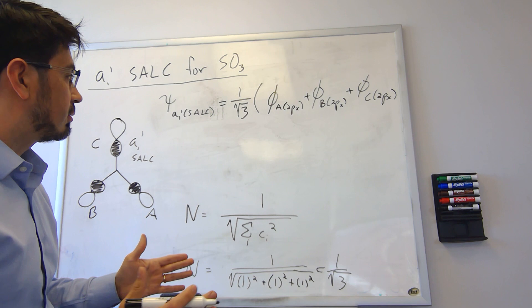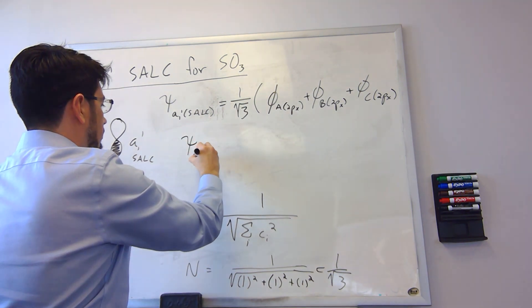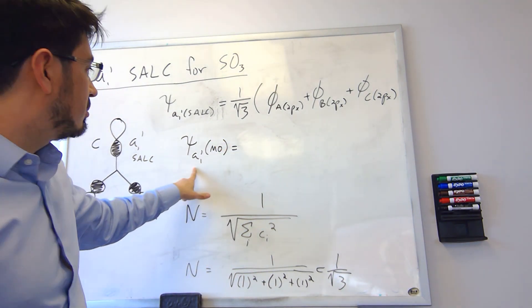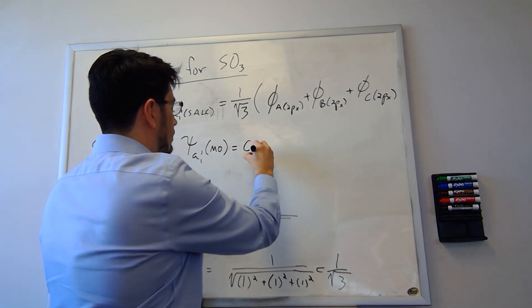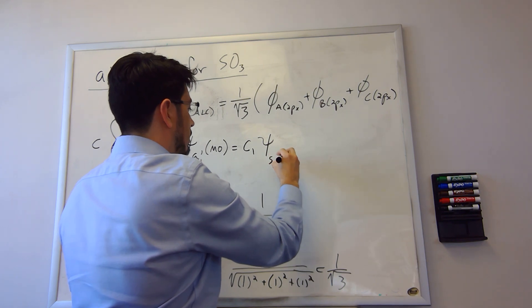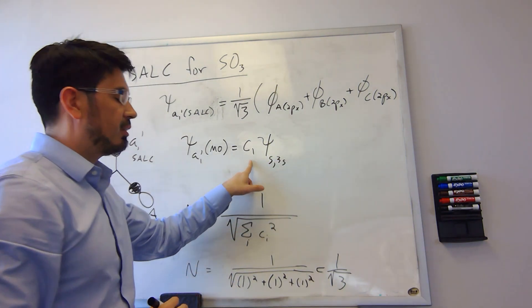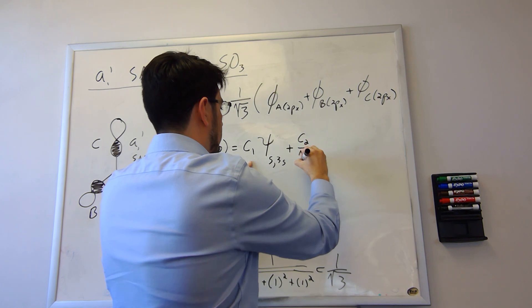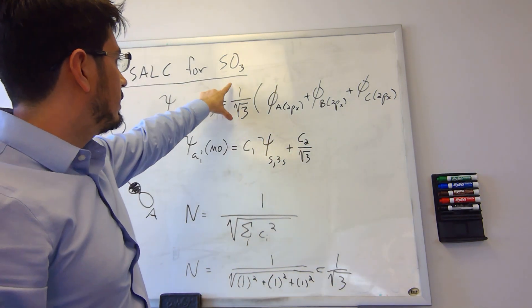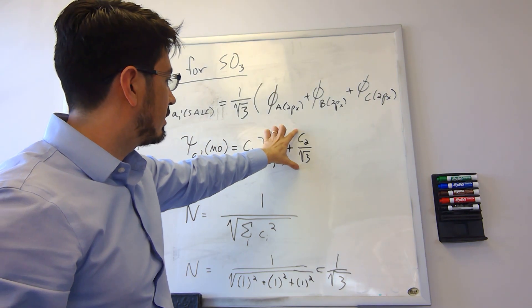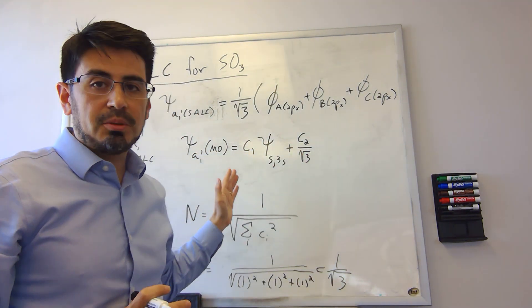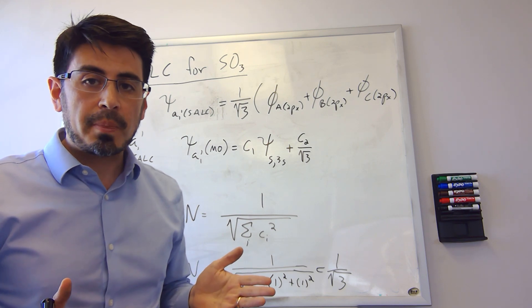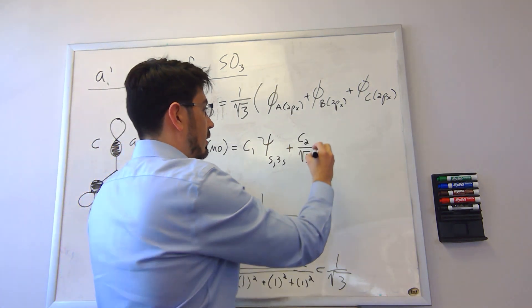So when we're writing the molecular orbital for bonding corresponding to the A1 prime symmetry, we're going to combine the sulfur 3s orbital. It has some contribution C1 plus C2 over root 3 because we're taking our normalization constant and putting it right here. But we still don't know how much the SALCs contribute to the MO and the sulfur 3s contributes to the MO, so you just leave them as open variables because those have to be calculated in order to be obtained.